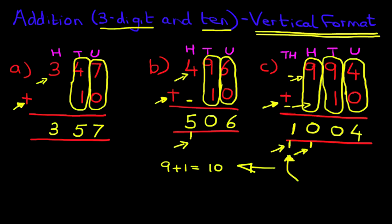So you see, adding three-digit numbers and 10 even with carrying in the vertical format is very, very simple.